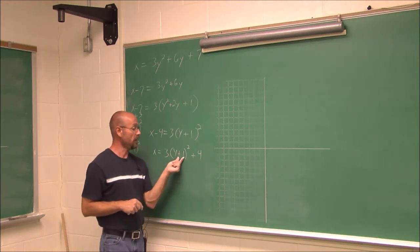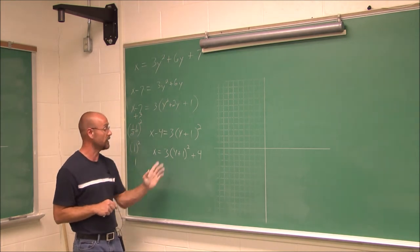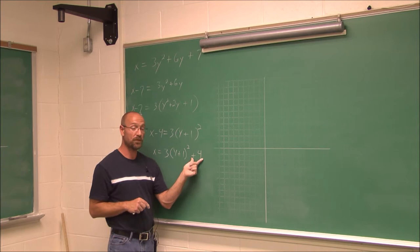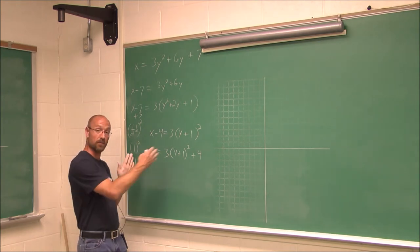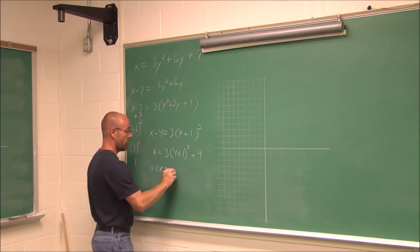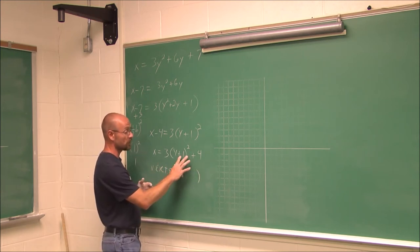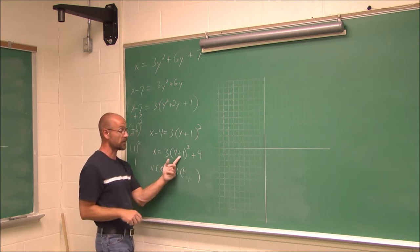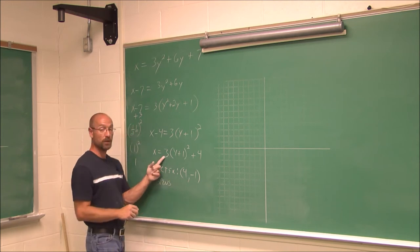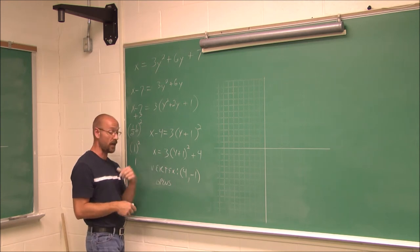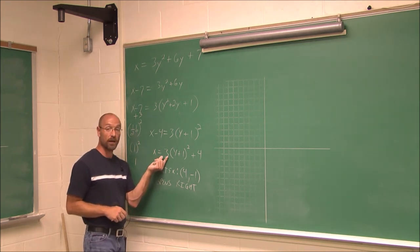Now I can set it equal to x and get it back in standard form: x equals 3 times (y plus 1) squared plus 4. I know a is a positive value, so it opens to the right. k is negative 1 — it's always the opposite of what I see in the parentheses, since it's y minus the k value. h is 4, outside the parentheses, affecting x — our horizontal shift. So our vertex is h, k: (4, negative 1). Because this value of a is greater than 1, the graph will be narrower.